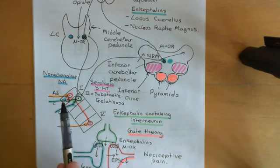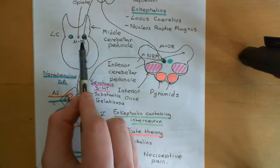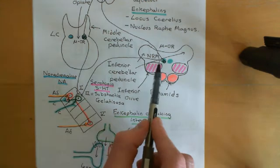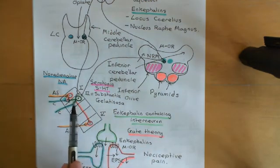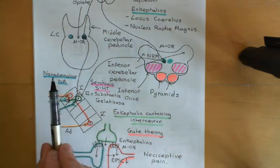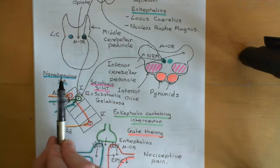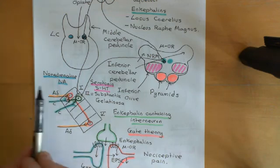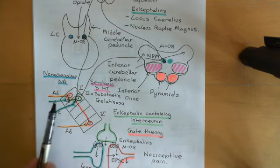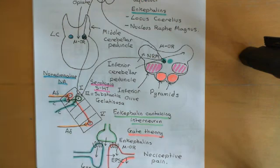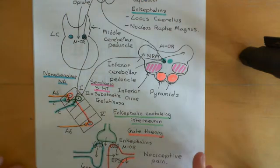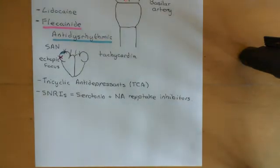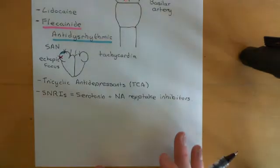These neurons release enkephalins onto the synapses between primary nociceptive afferents and secondary spinothalamic projection neurons, weakening that synapse and effectively closing the gate. So if we can potentiate the activity of these locus coeruleus neurons and nucleus raphe-magnus neurons, we can close this gate, which is useful if damaged peripheral primary nociceptive afferents are firing spontaneously.